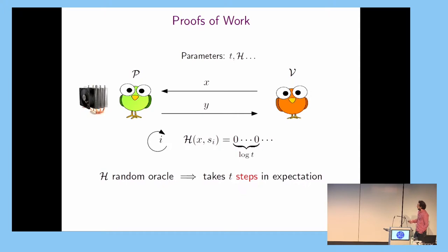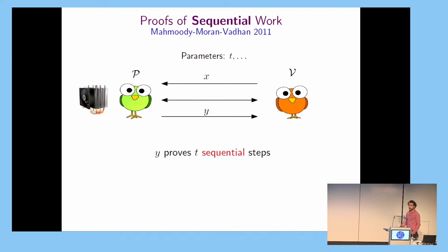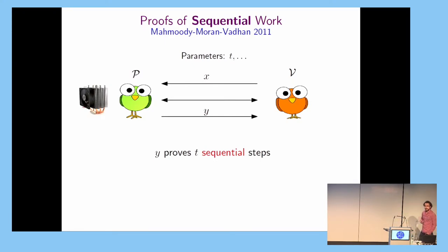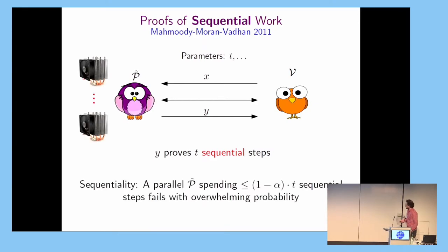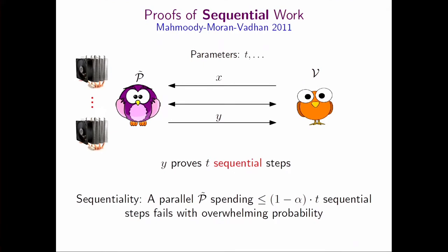If the verifier cares about the sequentiality of the work, we come into the concept of proofs of sequential work — an interactive proof system where the prover proves t sequential steps, not merely t steps. The way to formalize it is: even given a massively parallel adversary that tries to save on sequentiality, it will fail with overwhelming probability.